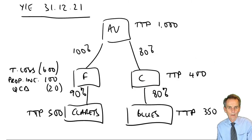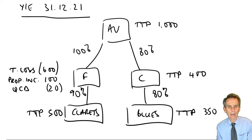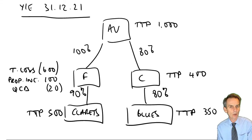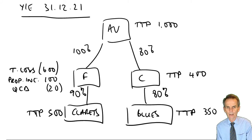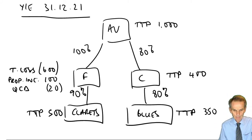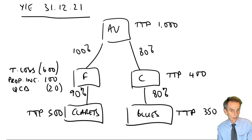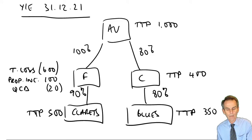Before we move on to our final section here within our chapter on groups — that final section being the existence of a chargeable gains group — what does it mean when different companies within a group are classified as gains group members, what requirement does that place upon them and what opportunities does that give to them? Before we do that, I thought we'd just test out and revise our knowledge of groups so far, most especially in relation to our group relief of losses and in relation to the significance of related 51% group companies. That might seem like a while ago now.